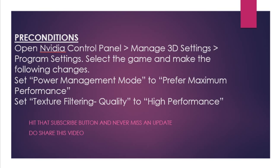If you have an Nvidia graphics card, go to the Nvidia Control Panel, manage 3D settings, program settings, select the game, and make the following changes: set the power management mode to prefer maximum performance, and set the texture filtering quality to high performance, so that your game gets the maximum performance out of your graphics card.